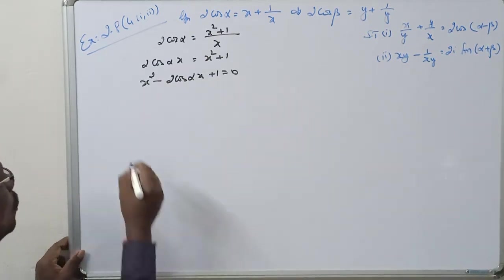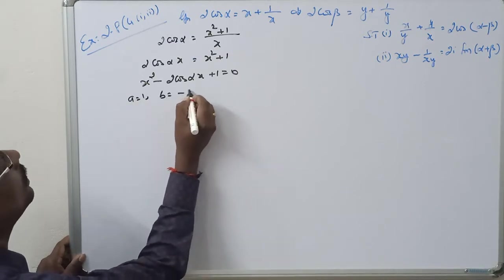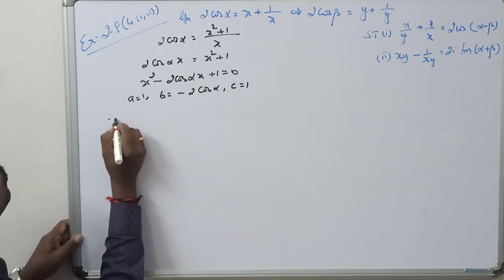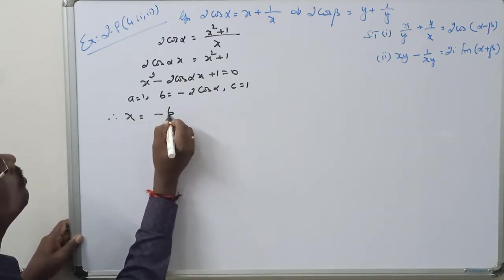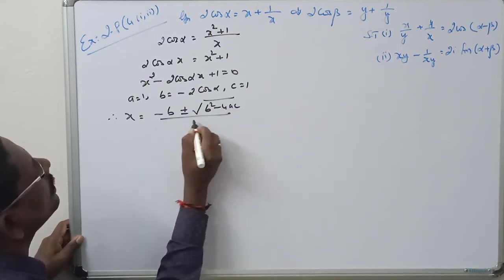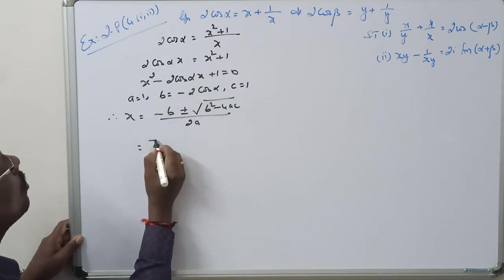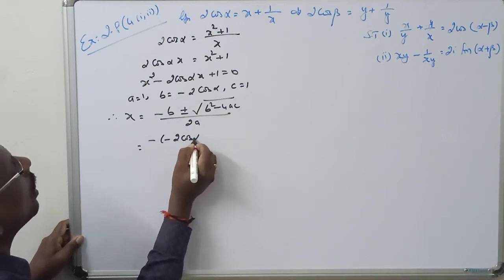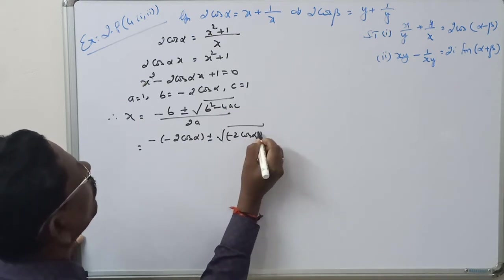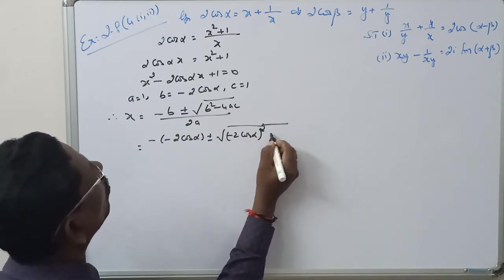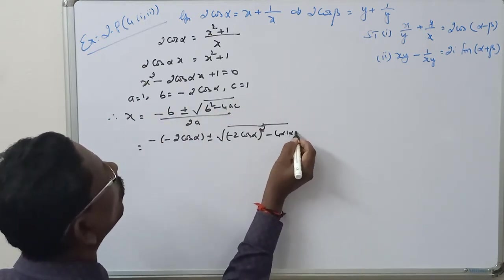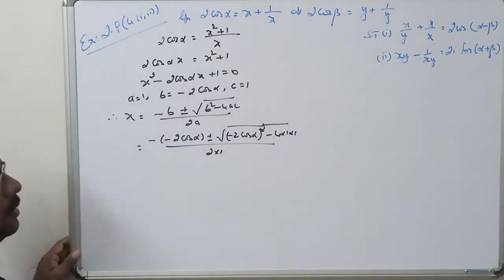It is a quadratic equation. So what is a? a equal to 1, b equal to minus 2cos α, c equal to 1. Therefore x is equal to minus b plus or minus square root of b² minus 4ac divided by 2a. Substituting: minus of minus 2cos α plus or minus square root of (minus 2cos α)² minus 4 into 1 into 1, divided by 2 into 1.